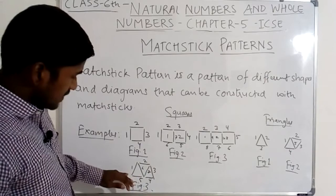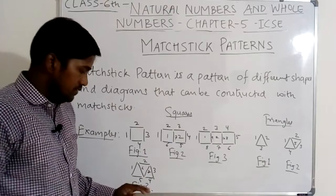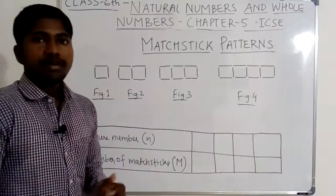And how many triangles are here? One, two, three. Three triangles in figure 3. So this is called the mastic patterns. Friends, now we will study the mastic pattern in more detail.